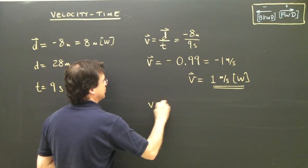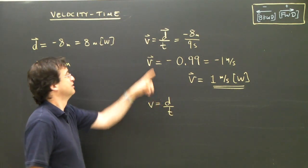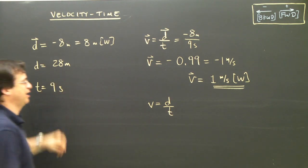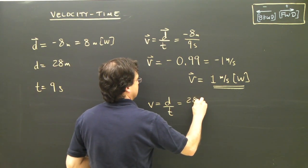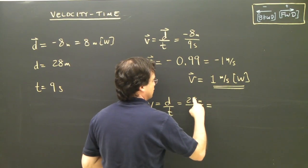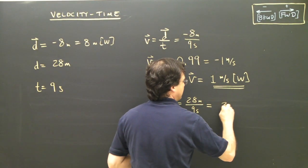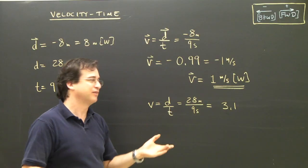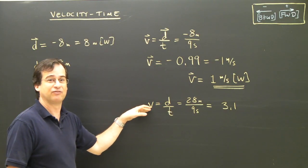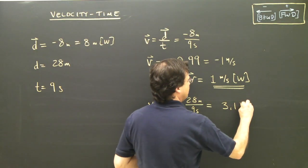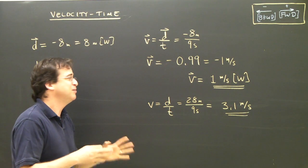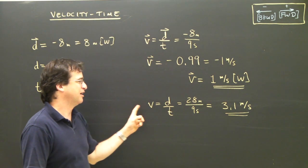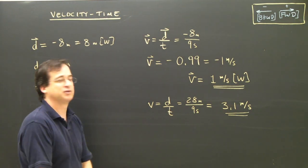Speed is similar to velocity but uses distance instead of displacement, and doesn't need a vector symbol. My distance was 28 meters and the time was nine seconds. So 28 divided by nine equals approximately 3.1 meters per second. No positive or negative needed because there's no forward or backward — it's just speed, a scalar quantity. So for that same motion, the velocity was one meter per second west, but the speed was 3.1 meters per second.